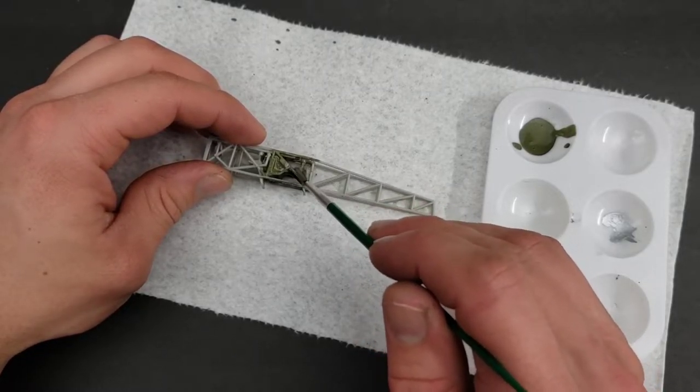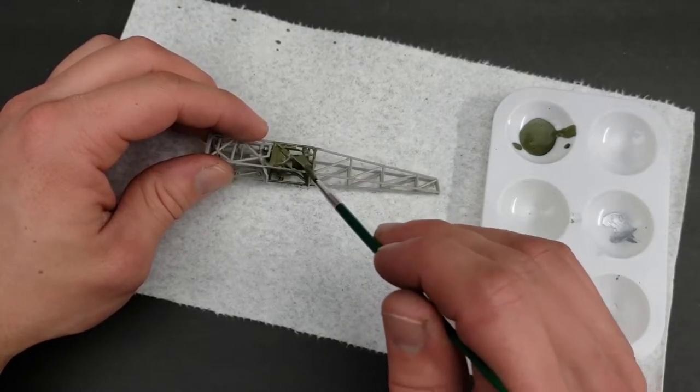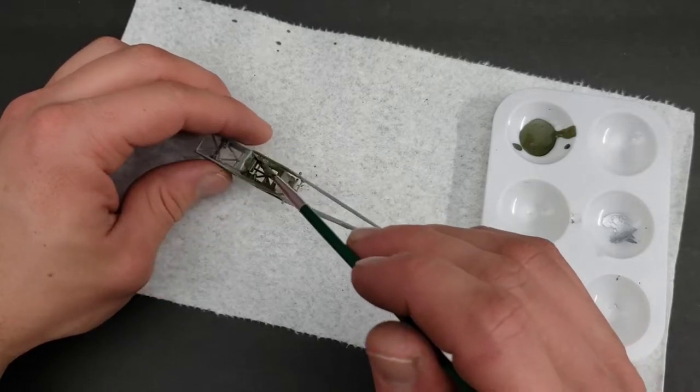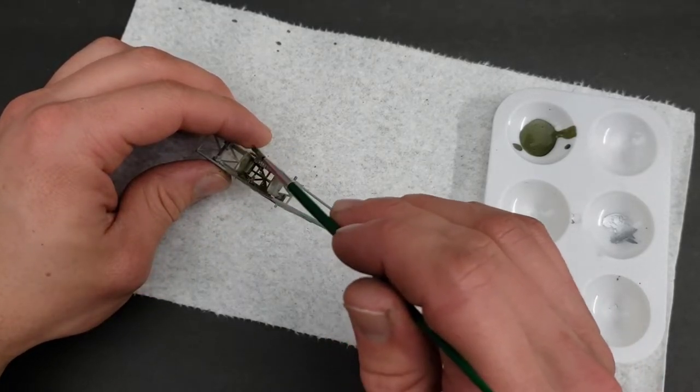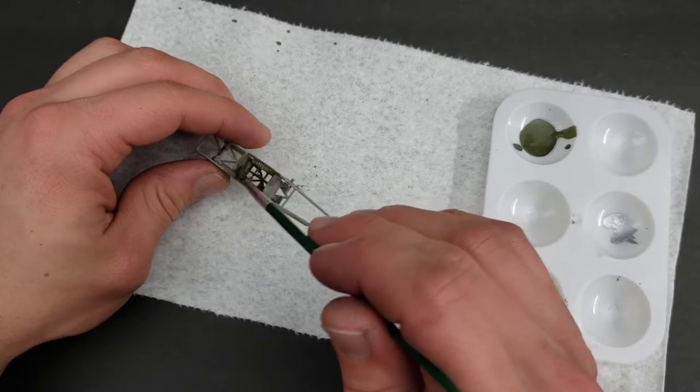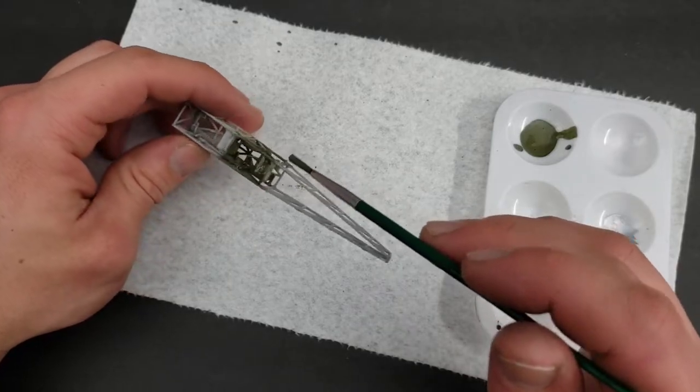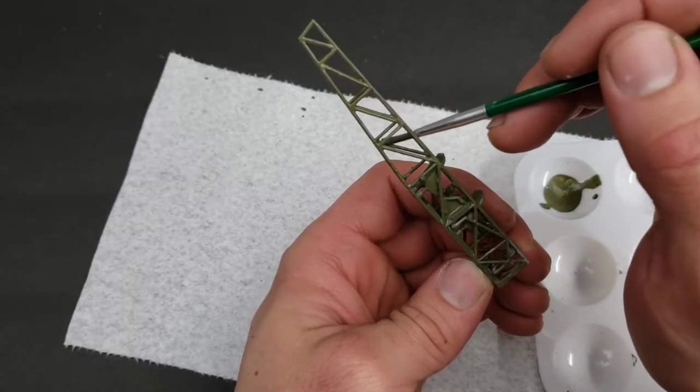If you wanted to airbrush it, you could definitely do that. We will be airbrushing in this video later on when we do the exterior of the airplane. But for now I just wanted to quickly apply some green and get this thing assembled.